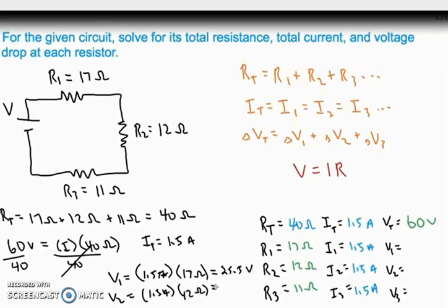Finally V3, which is 1.5 amperes again, and R3 is 11 ohms, so it gives you 14.5 volts. If you add up all these together you should be getting 60 volts: 25.5 volts, then we have 18 volts and 14.5 volts. As you add up you can see it's 60.